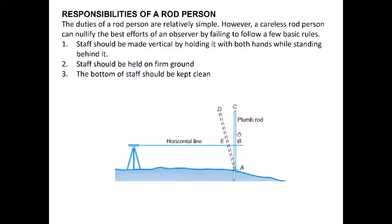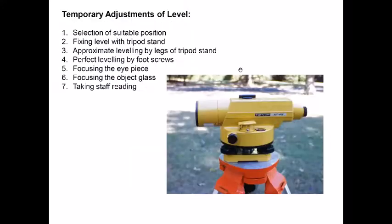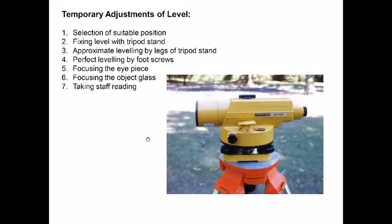The staff holder also needs to ensure there are no overhead wires that could hit the leveling staff, since it can extend up to five meters and is made of metal — a safety hazard. To summarize the temporary adjustments: select a suitable position to view maximum points; the instrument does not have to be placed between the two points — there is no centering in auto level. Fix the tripod legs firmly, approximately level using the tripod legs, then perfectly level using the three leveling screws, focus the eyepiece and objective lens to remove parallax, and then take the staff reading.